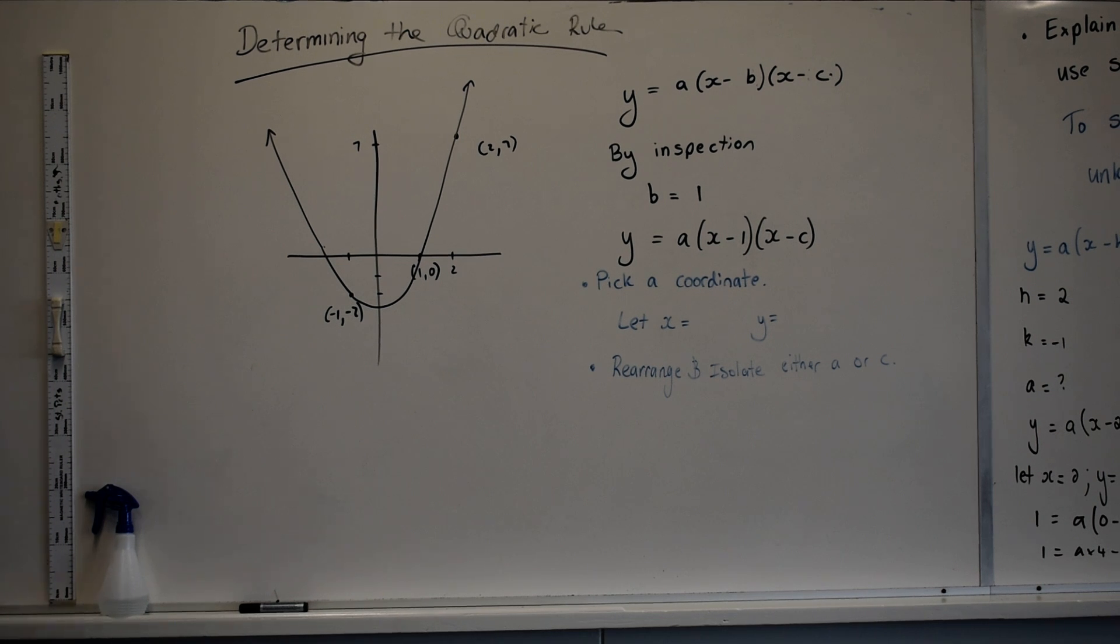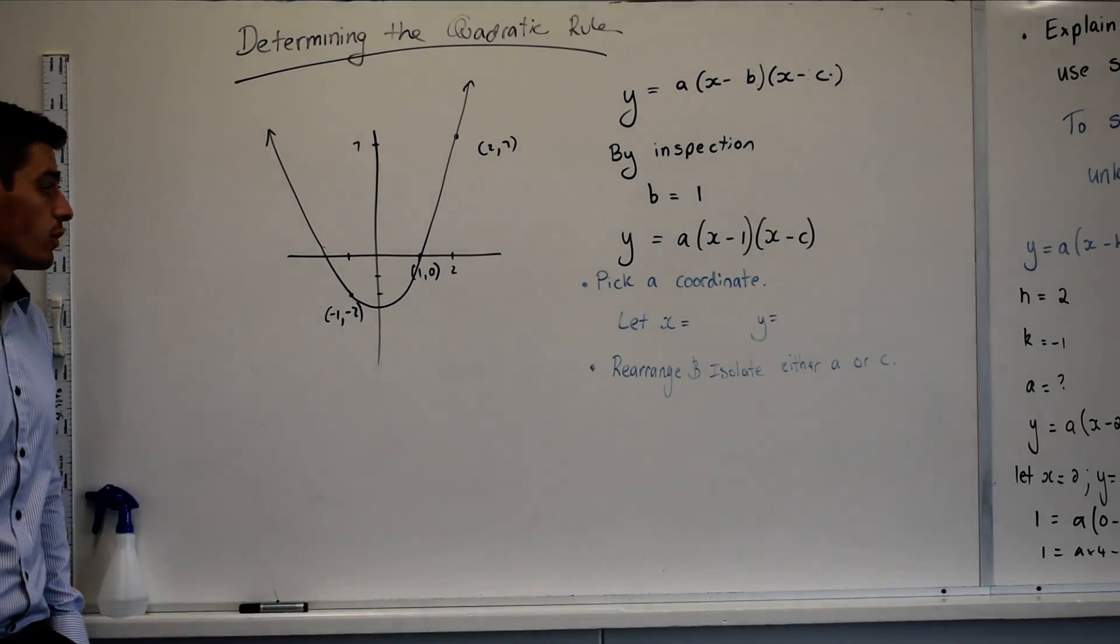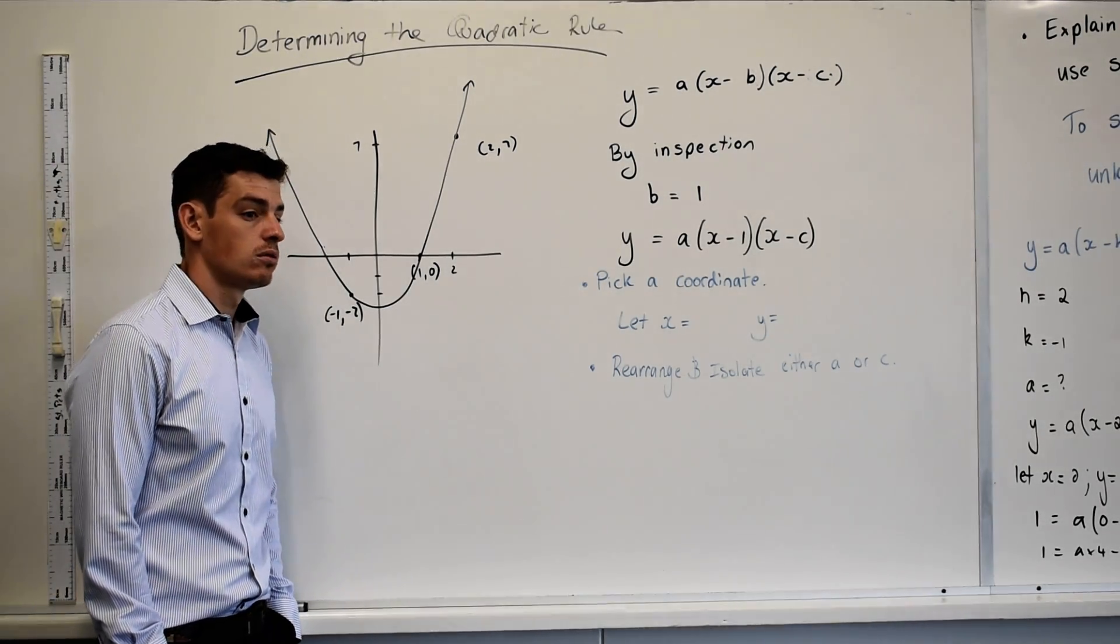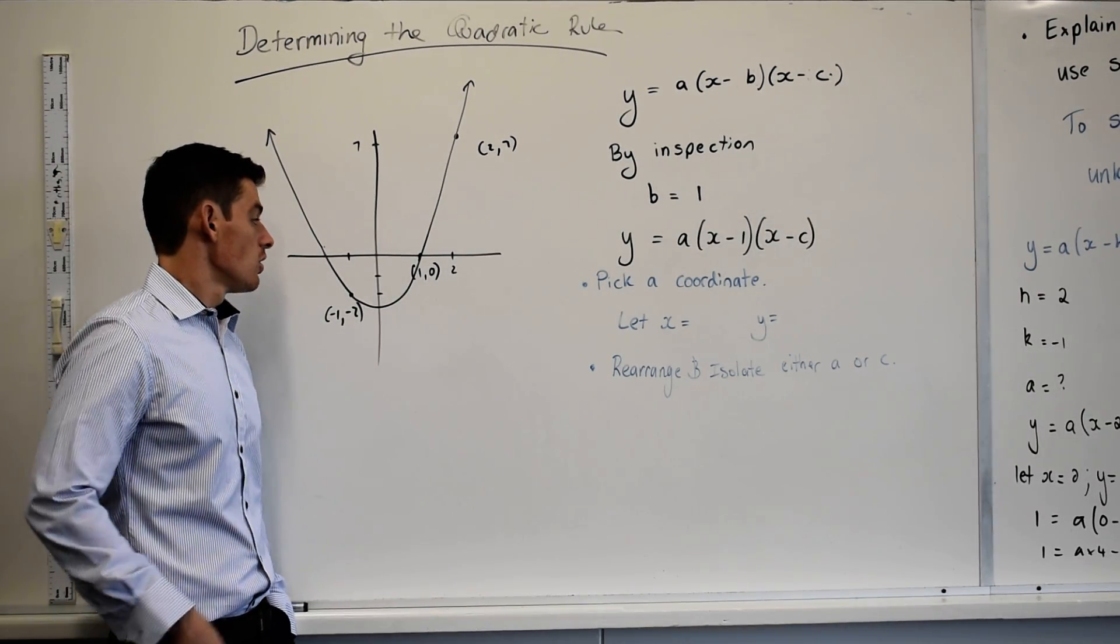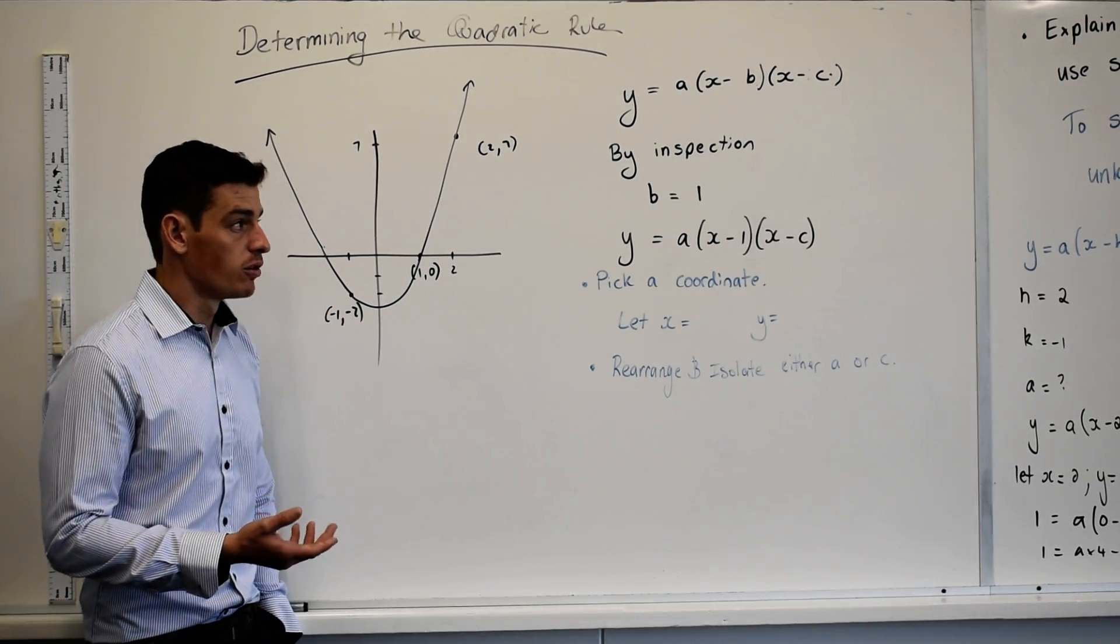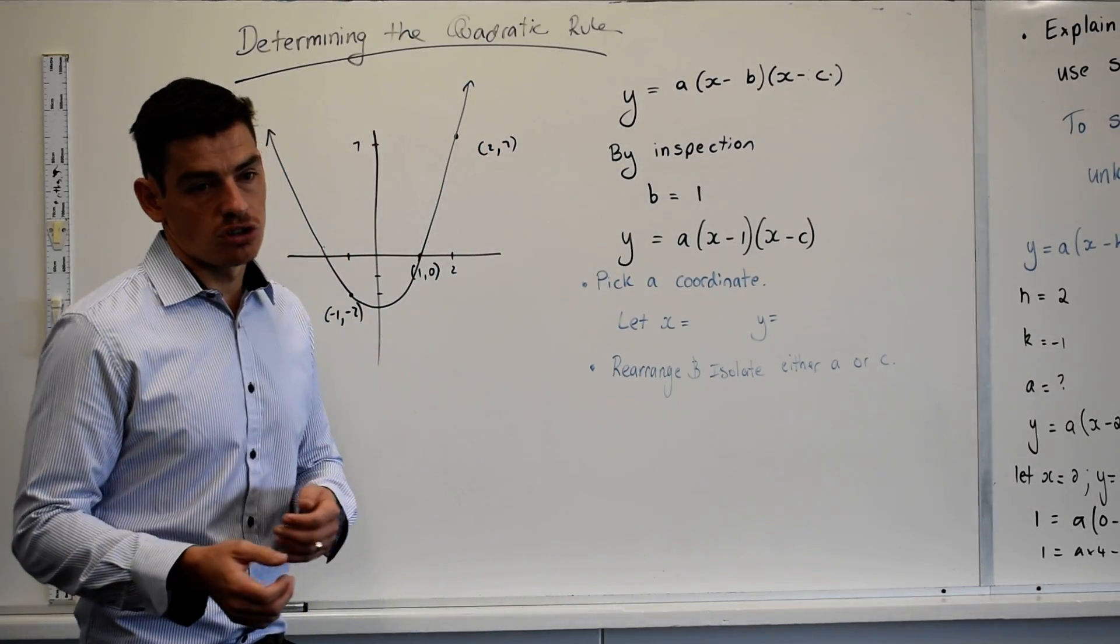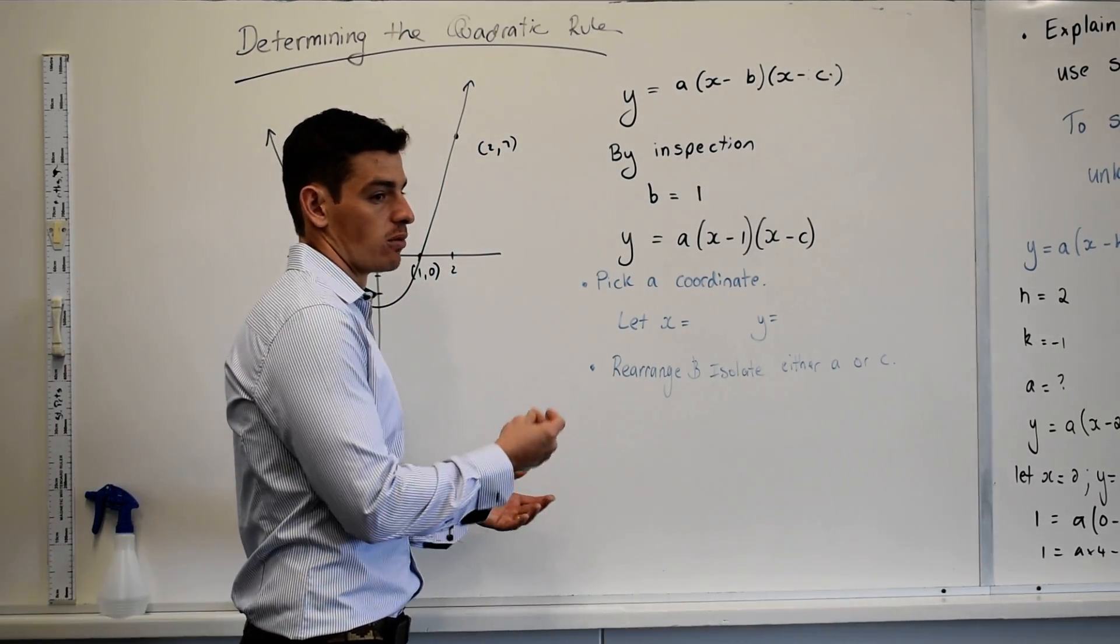What's the key difference? I have three points, that's the key difference. What else? George? Not necessarily given two intercepts. Not given two intercepts and I'm not given any turning points. So now we're looking at the situation where we can't just, by inspection, find two of the variables straight up.